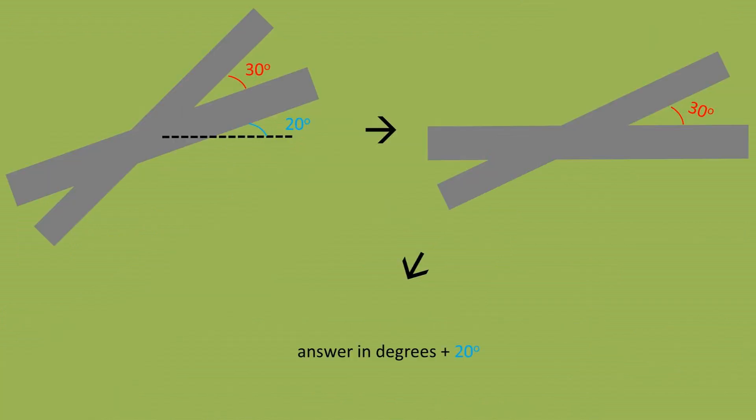A quick note, if your professor gives you this problem, but there is a slight angle to both of the roads, you can just orient it so it has this position as depicted in this problem, then basically just add whatever the additional angle is to your final answer.